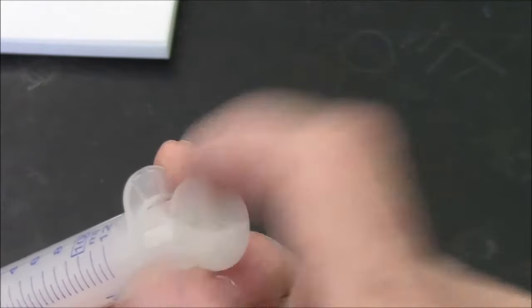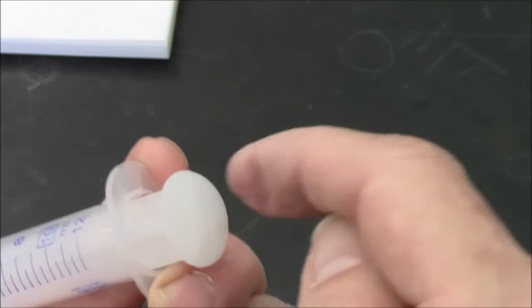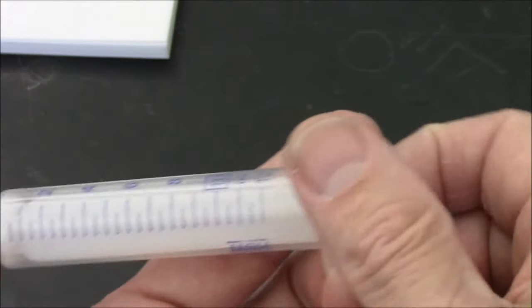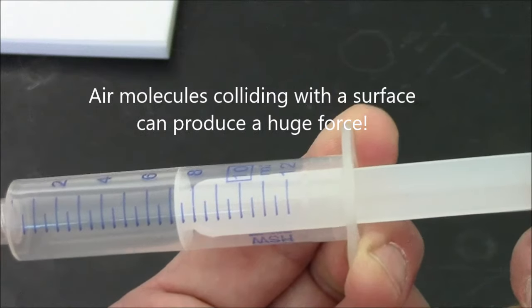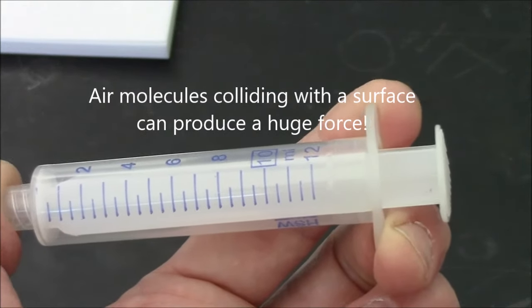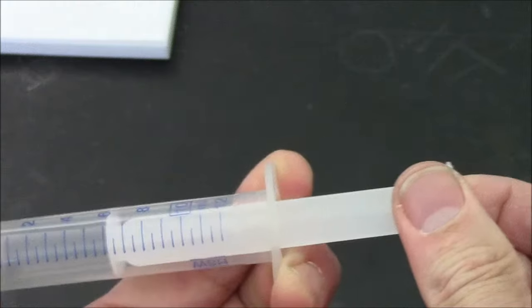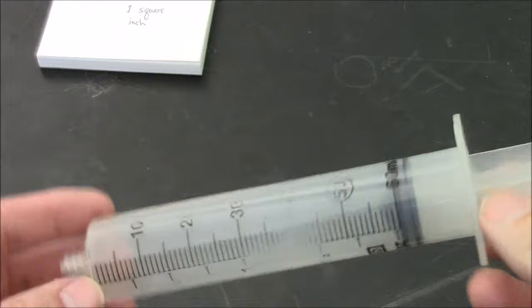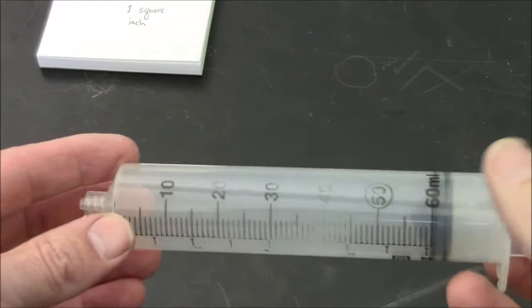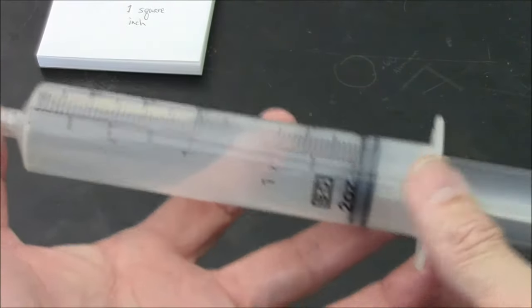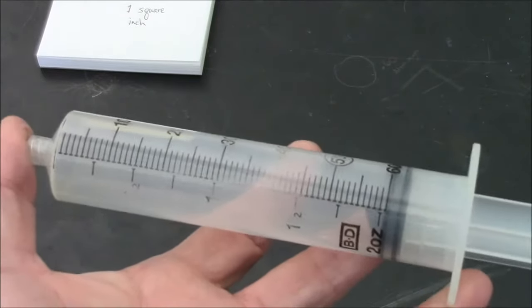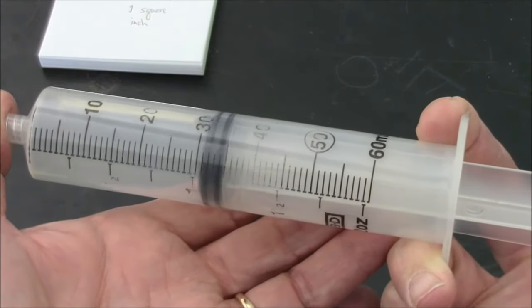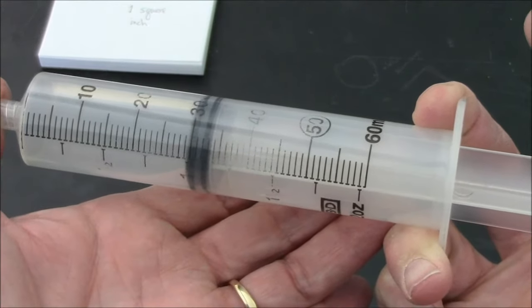So this is an example of a vacuum. Inside the syringe there's no air, and therefore there's nothing pushing on the plunger from the inside. But there's plenty pushing on the outside because air molecules are colliding with the surface, pushing 14.7 pounds per square inch. That force is plenty to move this plunger back where it came from, almost magically.